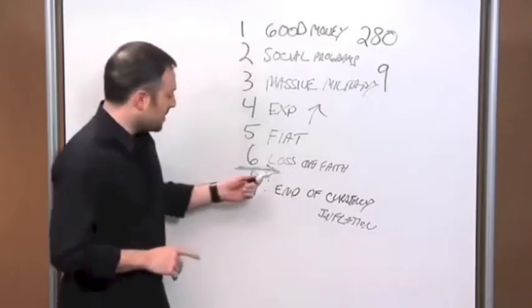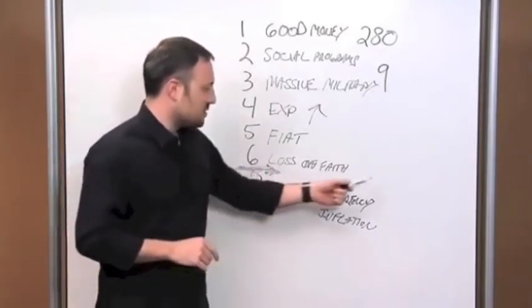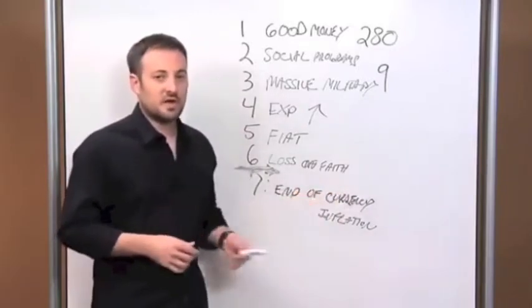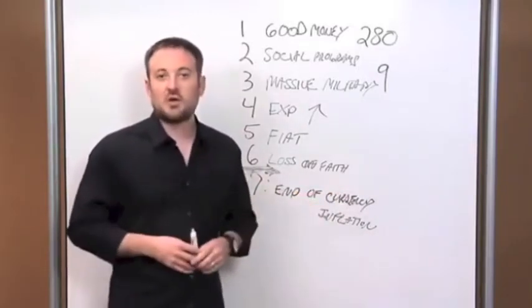We've seen Egypt essentially collapse because of food prices and food inflation. So we are clearly right here, and this is due to everything that Ben Bernanke and the Federal Reserve has been doing with the U.S. dollar and our currency.